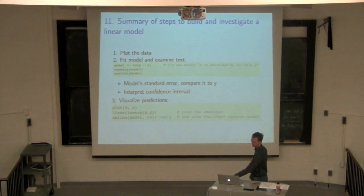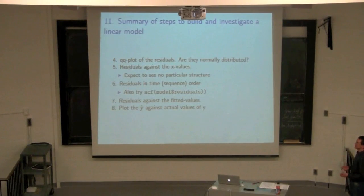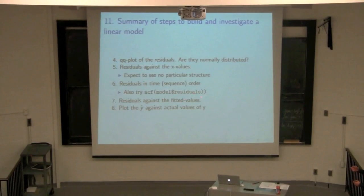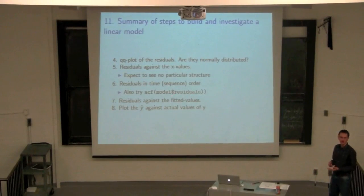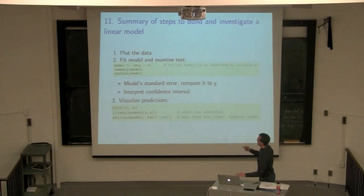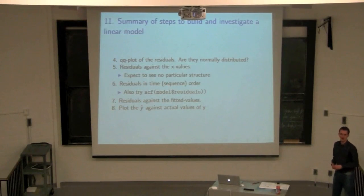Check the QQ plot of the residuals — are they normally distributed? Plot residuals against x, against time, and against fitted values to check for non-constant variance, non-linearity, and time-related patterns. Use the ACF function on the model residuals: model$residuals gives you the residual vector automatically. The model object also contains fitted values via model$fitted.values — you don't need to manually extract B0 and B1 to compute ŷ. Plot ŷ against y and expect a 45-degree line.